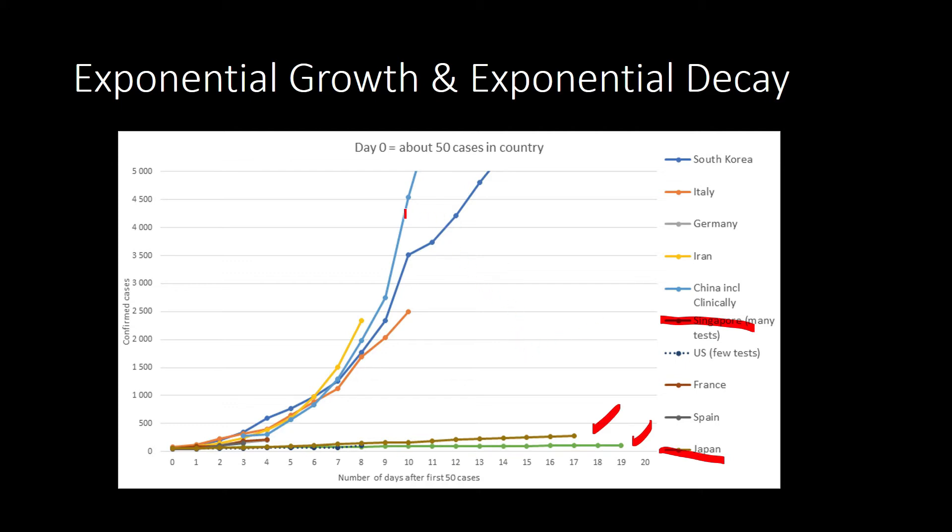So let's say, for example, in the case of China. Look at this, China. In a matter of one day, from day nine to day 10, what you have here is an increase from 4,000 cases to 4,500 cases. So you have there 500 new COVID-19 cases in just one day.